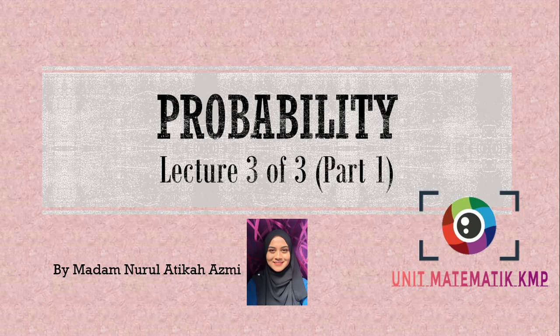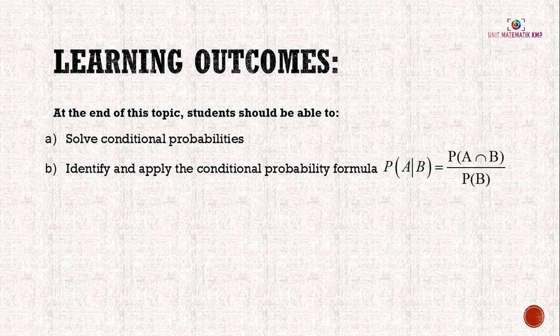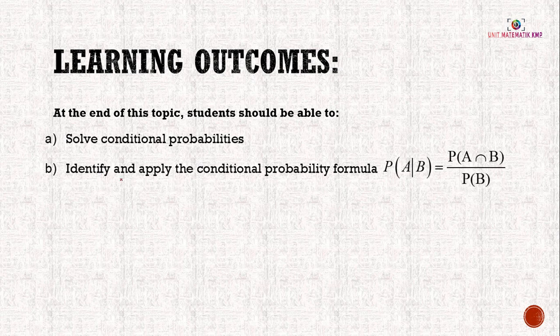Assalamualaikum, hi everyone. So for today's video, we are going to learn Probability Lecture 3 of 3 Part 1. The learning outcomes for this video: at the end of this topic, students should be able to solve conditional probability and identify and apply the conditional probability formula, which is P(A|B) = P(A∩B) / P(B).